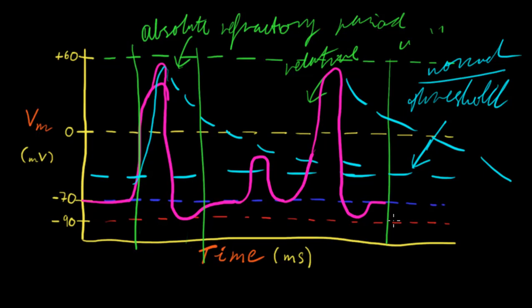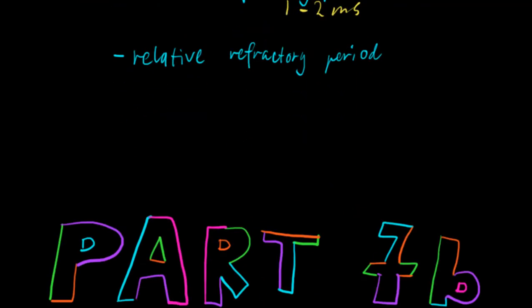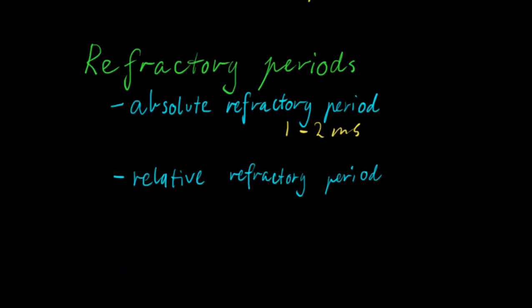Yeah, this is sort of one way that limits the amount of action potentials at any one time. This helps, I suppose, discern between the frequency of potentials and the strength of stimulus. And the relative refractory period is generally on the order of about six to seven milliseconds.